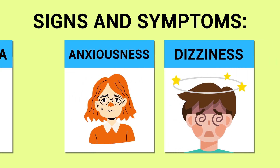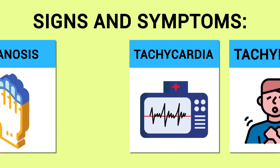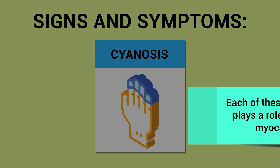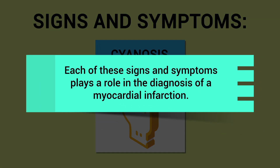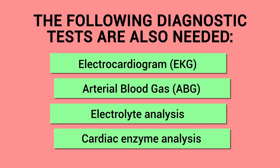Now let's talk about the signs and symptoms. Some examples include chest pain, chest tightness, dyspnea, diaphoresis, anxiousness, dizziness, tachycardia, tachypnea, and cyanosis. Each of these signs and symptoms plays a role in the diagnosis of a myocardial infarction; however, the following diagnostic tests are also needed.